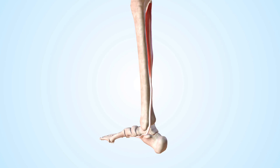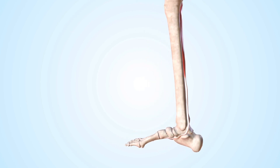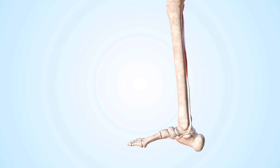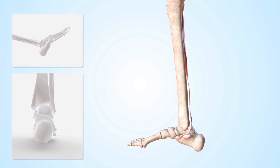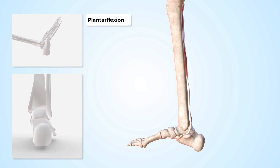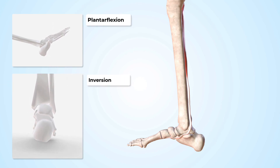On to nerve supply. The nerve supply for this muscle comes from the tibial nerve, from the nerve roots L4 and L5. Then we come to the all-important roles of this muscle. Its movement-based roles include plantar flexion of the ankle and inversion of the ankle.